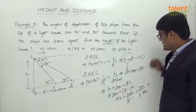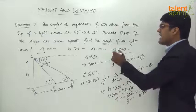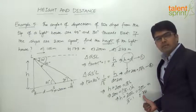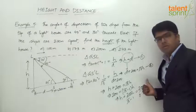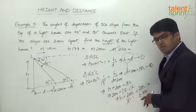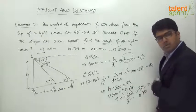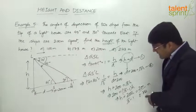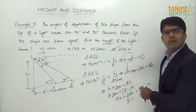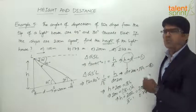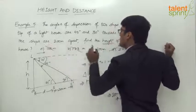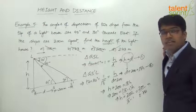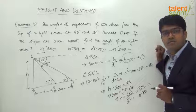Without full simplification, we can identify the answer. The denominator 0.732 is less than 1, so 200 divided by something less than 1 must be greater than 200. Options A, B, and C are all less than or equal to 200, so they cannot be the answer. Therefore the answer is option D: 273 meters. This shows that calculation intuition plays a key role — recognizing the logic saves time rather than fully computing the division.